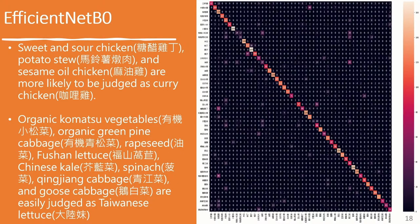We found two situations that are easily misjudged. In the first case, sweet and sour chicken, potato stew, and sesame oil chicken are more likely to be judged as curry chicken. In the second case, organic camacho vegetables, organic green pine cabbage, rapeseed, fuzan lettuce, Chinese kale, spinach, chingjiang cabbage, and goose cabbage are easily judged as Taiwanese lettuce.